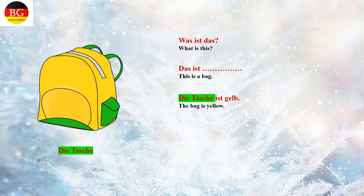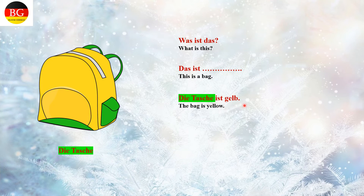Now let's do some practice. Was ist das? This is a picture of a bag — 'die Tasche' — it is feminine. Das ist eine Tasche. If we want to give detail about the bag we use the bestimmter Artikel: 'Die Tasche ist gelb' — the bag is yellow. So the unbestimmter Artikel for feminine is 'eine', and the answer is 'eine Tasche'.